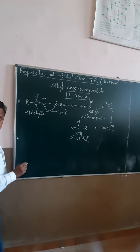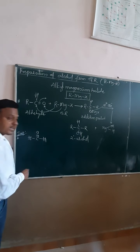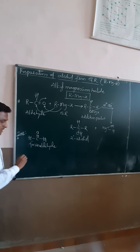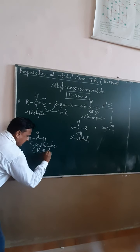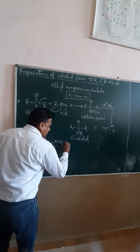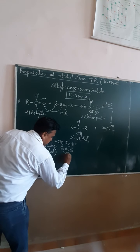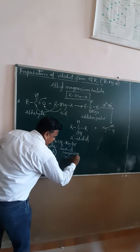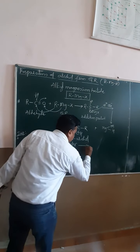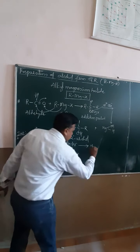Let us consider an example. It is very important for your competitive exam. A simple aldehyde is formaldehyde, which as IUPAC we call methanal. When formaldehyde undergoes reaction with methyl magnesium bromide — the Grignard reagent — cleavage of the pi bond occurs, magnesium attaches, giving an addition product with structure C bearing O-MgX and H.